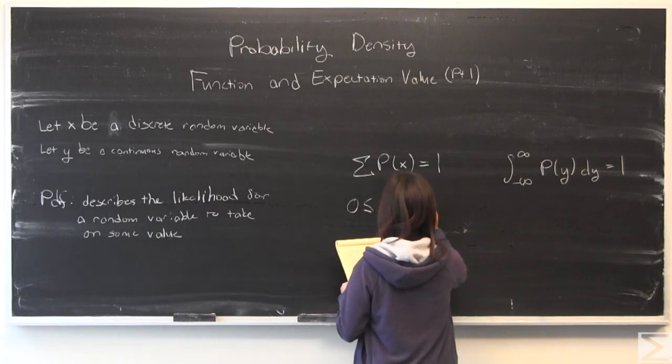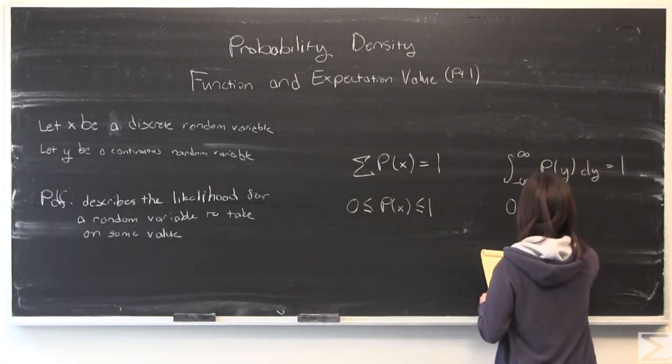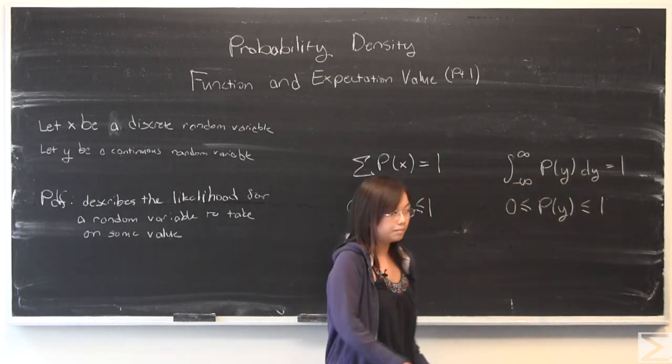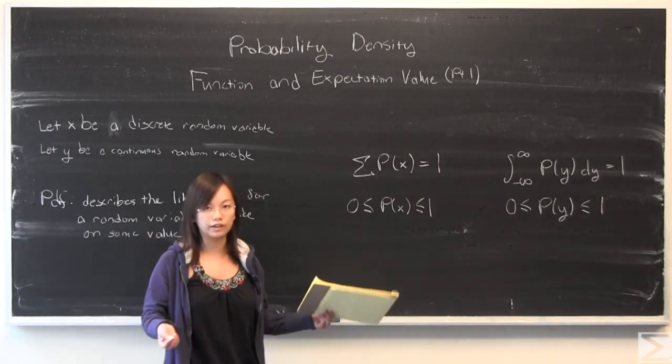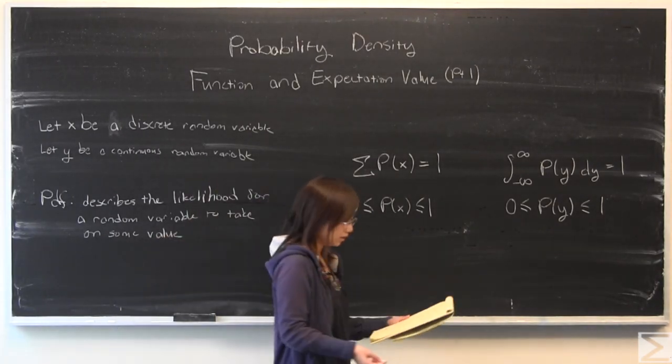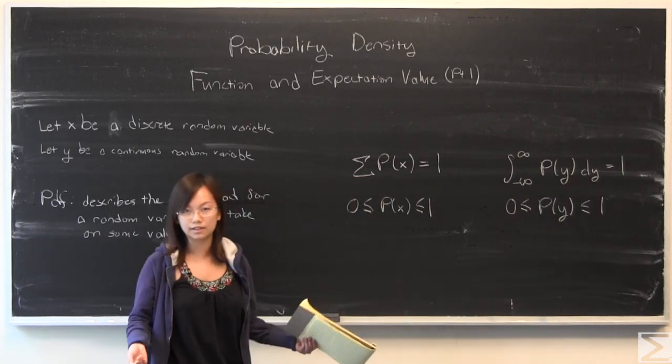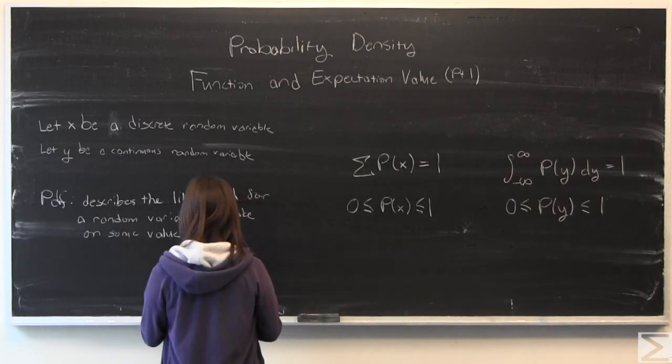Another important property is that probability density cannot be greater than one or less than zero in any place in the function. You cannot have a probability greater than one. You cannot have a probability that is less than zero. That does not have any meaning.